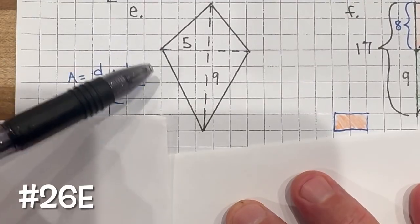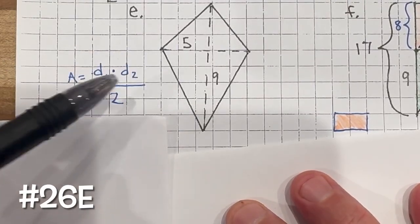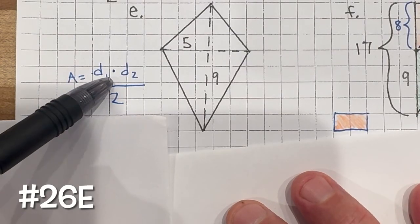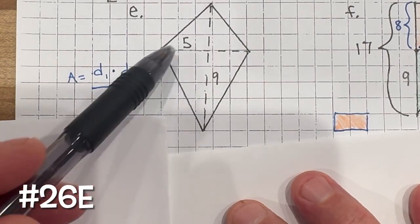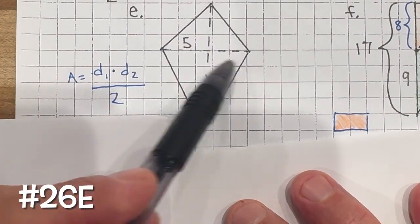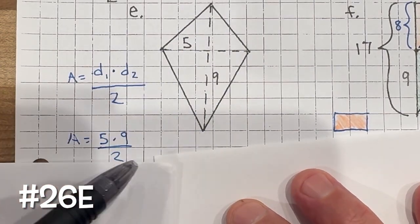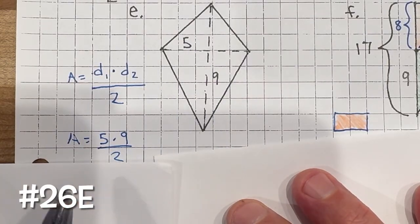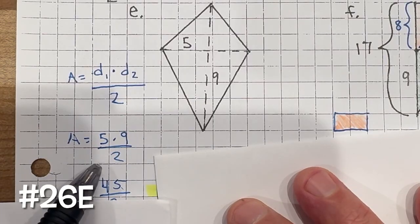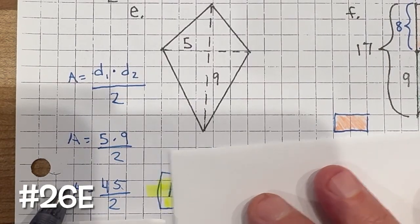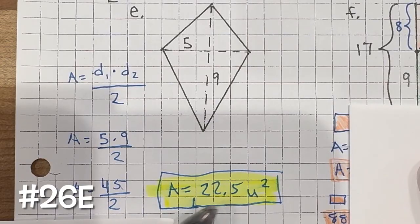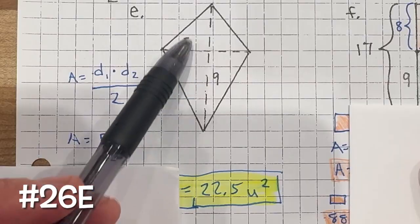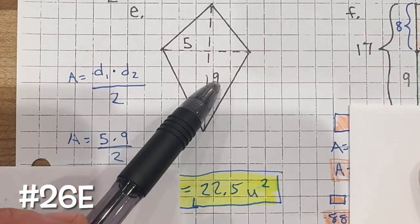Problem 26e: we're finding the area of a rhombus. The area of a rhombus is diagonal 1 multiplied by diagonal 2, divided by 2. It doesn't matter which diagonal you call 1 or 2. So diagonal 1 is 5, diagonal 2 is 9. 5 times 9 is 45, divided by 2 gives us an area of 22.5 units squared — units because no unit of measure (feet, inches, miles) is specified.